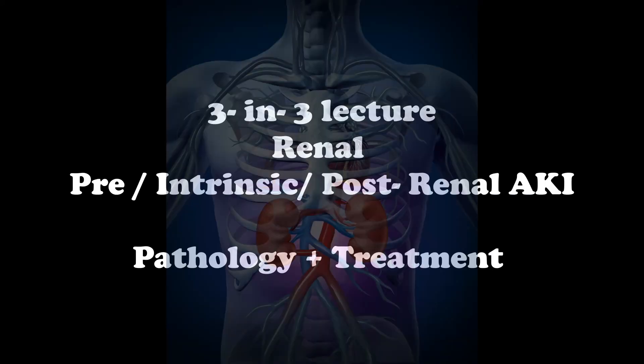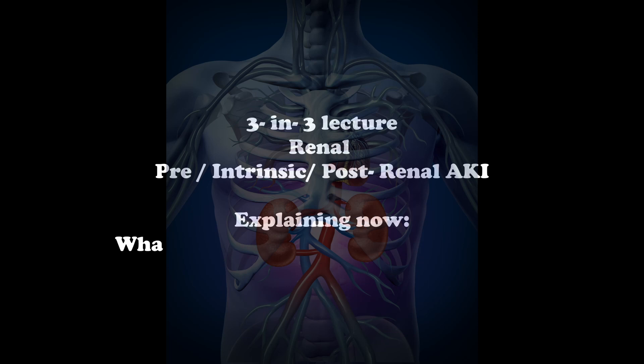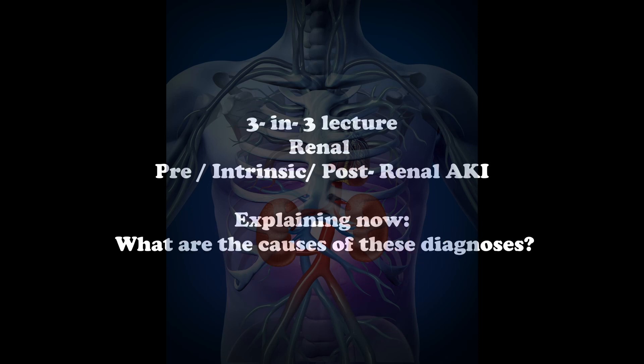When it comes to pre-renal acute kidney injury, it's pretty much any condition that is leading to decreased renal perfusion. The causes can be hypovolemia or hypotension, and the primary reasons include hemorrhage, vomiting, diarrhea, sweating, burns, diuretics, poor oral intake, or dehydration itself.